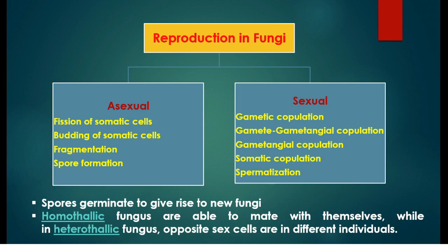In the case of sexual reproduction we can consider the fungus as two different groups: homothalic fungus and heterothalic fungus. Homothalic fungus means both the sex cells required for mating are present in the same fungus, so the fungus is able to mate with itself. In the heterothalic fungus, opposite sex cells are in different individuals.